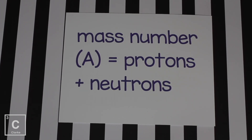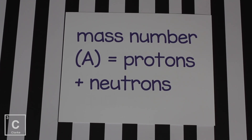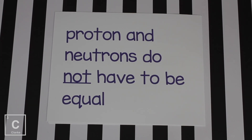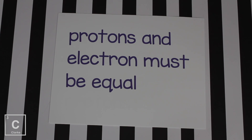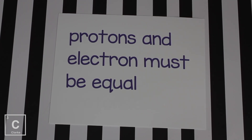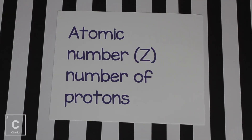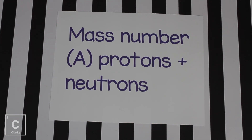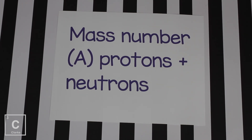The mass number is protons plus neutrons, and the symbol for mass number is the letter A. The protons and neutrons don't have to be equal, because neutrons have no charge — so the number of neutrons never interferes with the charge of an atom. But what must be equal is protons and electrons, because those are the charged particles — protons are positive, electrons are negative. All atoms are neutral: the pluses must equal the minuses. The atomic number Z is the number of protons, and the mass number A is protons plus neutrons.